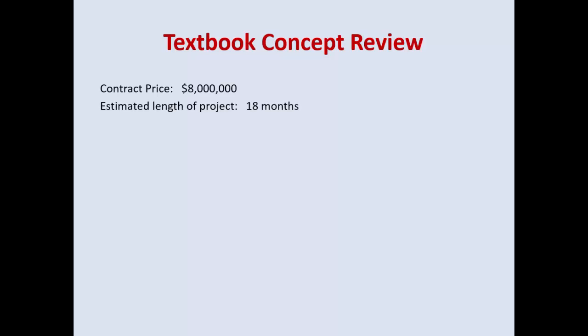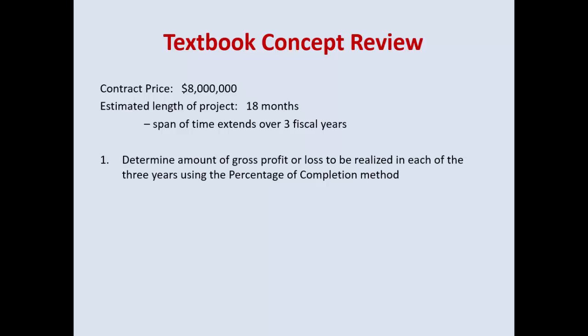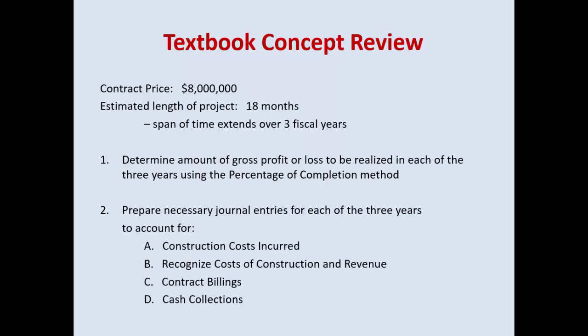This concept review problem uses an older text but is still a very good example. Contract price: $8 million; estimated length: 18 months. Even though 18 months is a year and a half, because of when it began and what time of year it spanned, it covers three fiscal years. You have to determine the gross profit or loss to be realized in each of those three years based on the percentage of completion method, and prepare the necessary journal entries for each of four events in order.